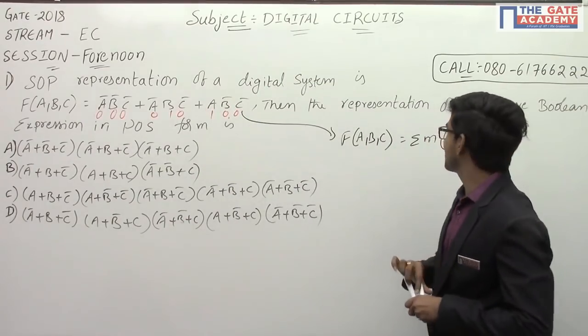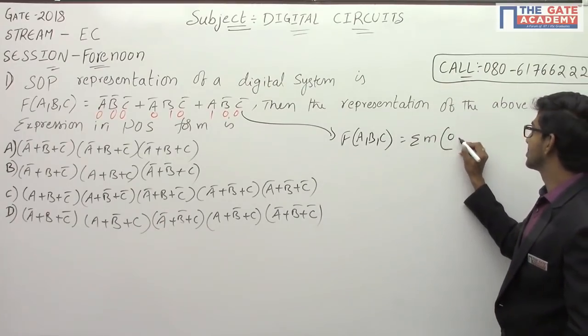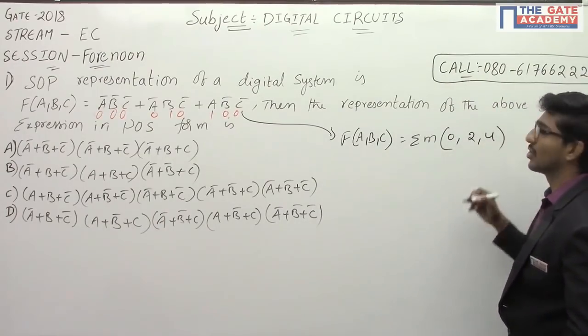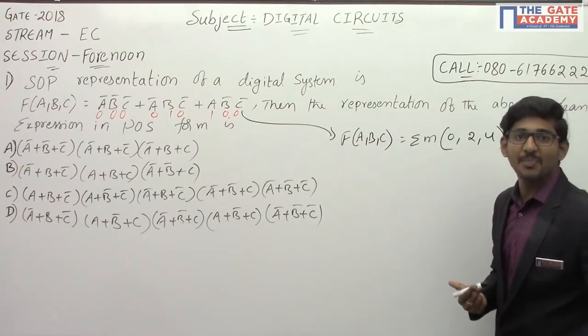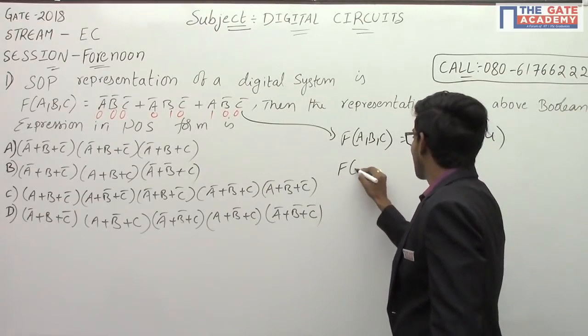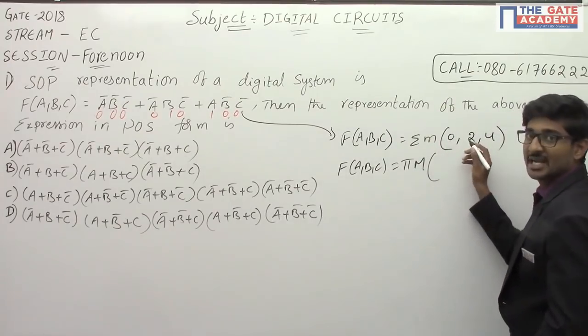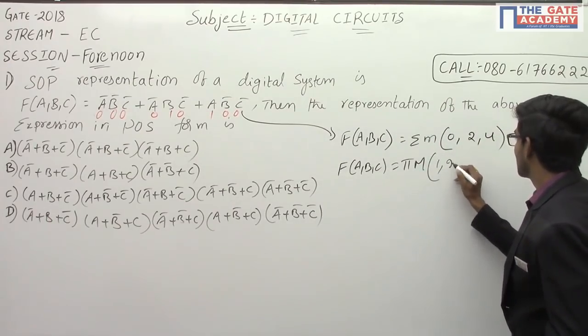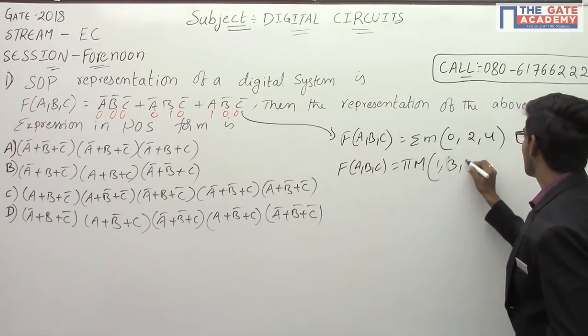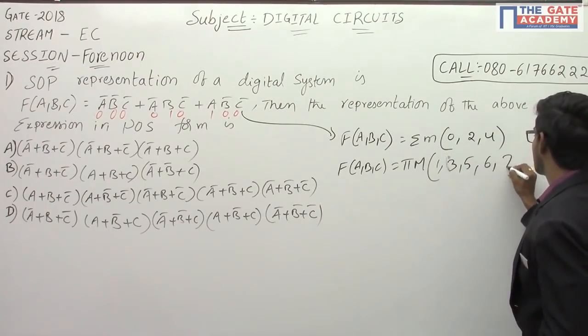So our minterms are f(A,B,C) = Σm(0,2,4). Now from this we can write the maxterms. Maxterms are nothing but Πm of the remaining terms, which are 1, 3, 5, 6, 7.